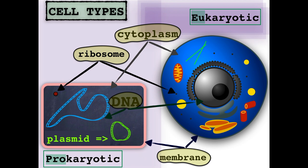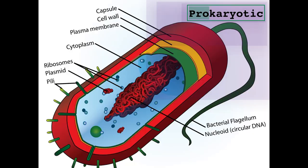So let's start with the structure of the simpler one. Except for the shared features, the prokaryotic cells have some characteristics in which they differ from the eukaryotic cell type. The DNA in prokaryotes is circular and called the nucleoid, and some prokaryotes may also have smaller circular DNA molecules called plasmids. To attach to surfaces, they have pili, and to help them move, the prokaryotes have flagella.